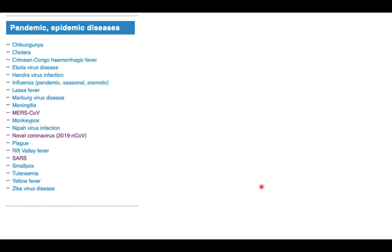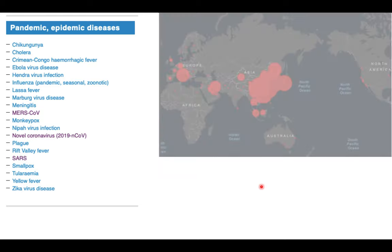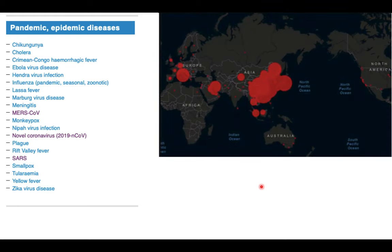Previous epidemic and pandemic diseases such as chickenpox, cholera, or Ebola are diseases you may have heard of. The three coronaviruses discussed today are MERS, novel coronavirus (COVID-19), and SARS. As you can see on screen, COVID-19 has been dotted around the world, mainly originating from Asia and spreading over to Europe and parts of America, mainly California and New York.